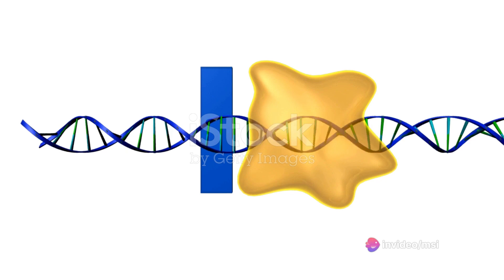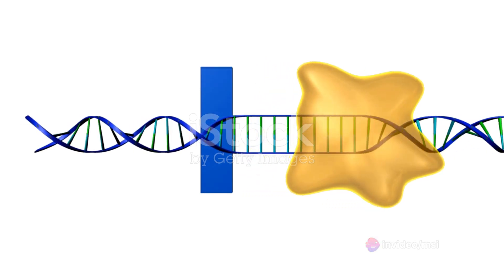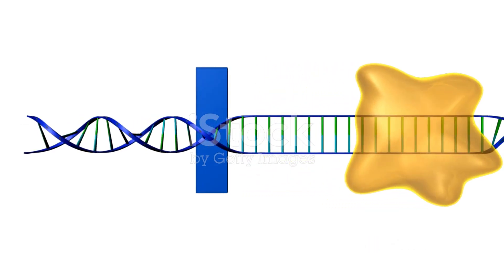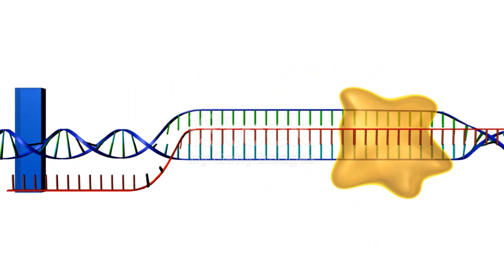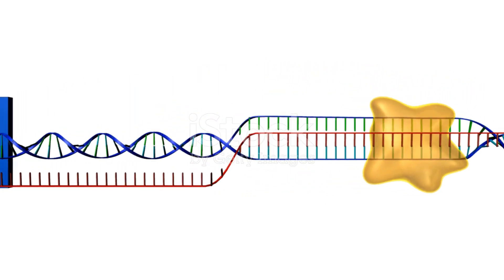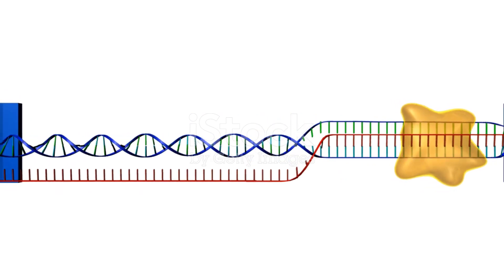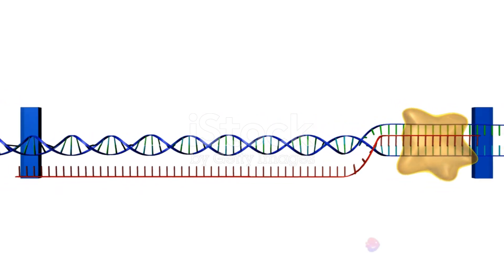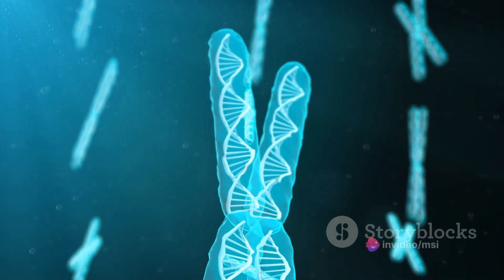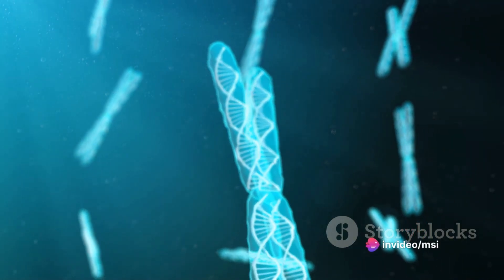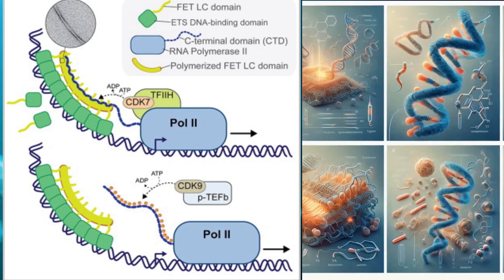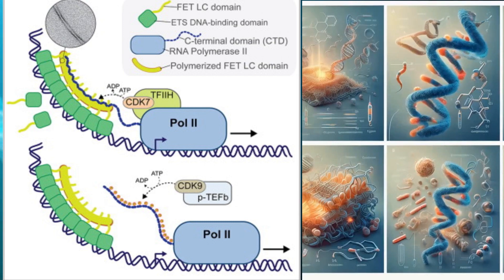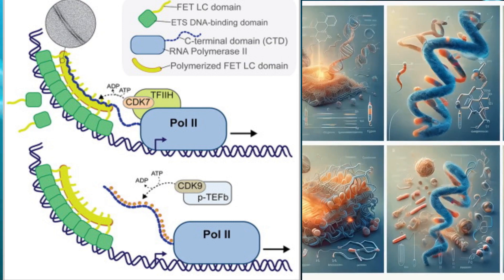Transcription is the delicate mechanism that allows genetic information from DNA to be copied into RNA, laying the foundation for protein synthesis. A key player in this process is an enzyme known as polymerase 2, or POL2 for short.